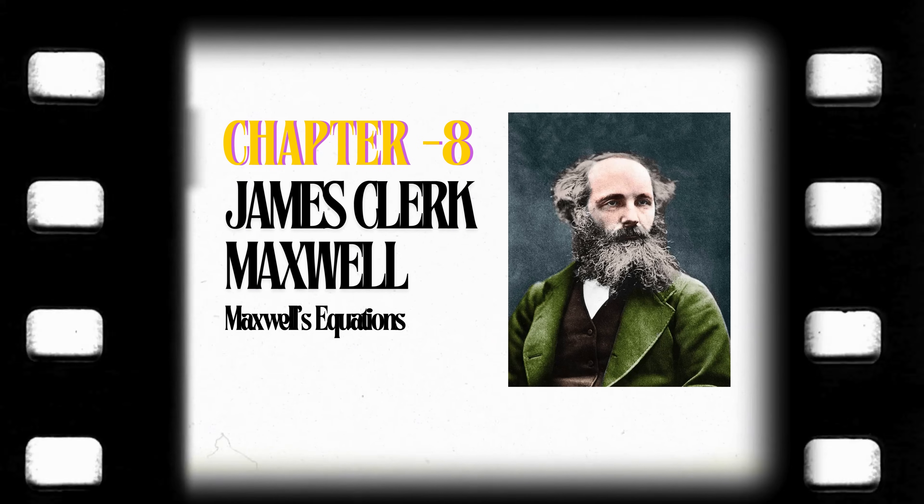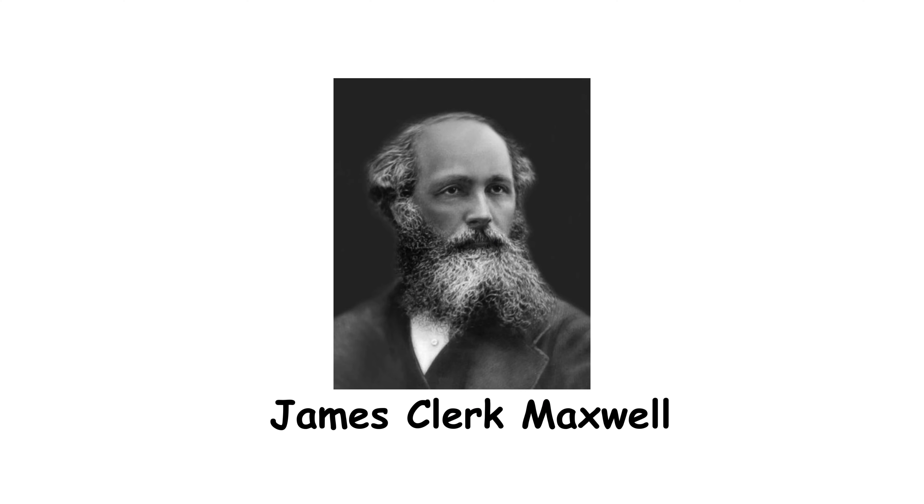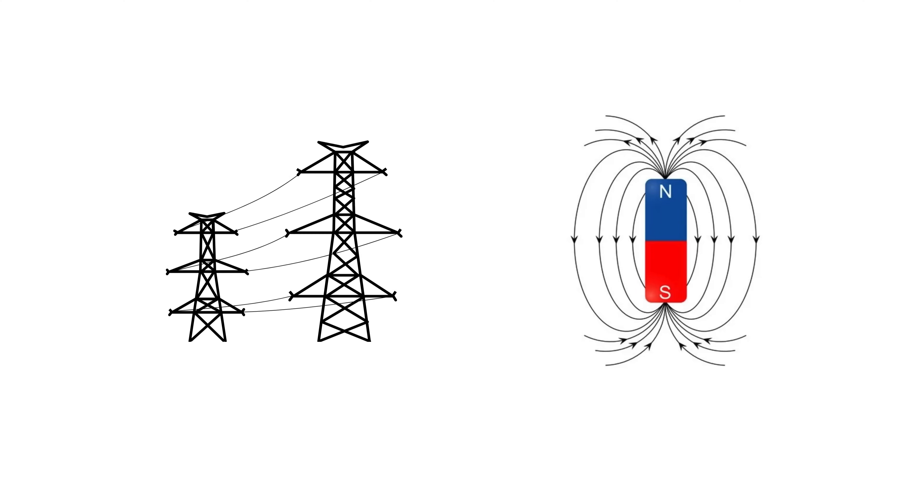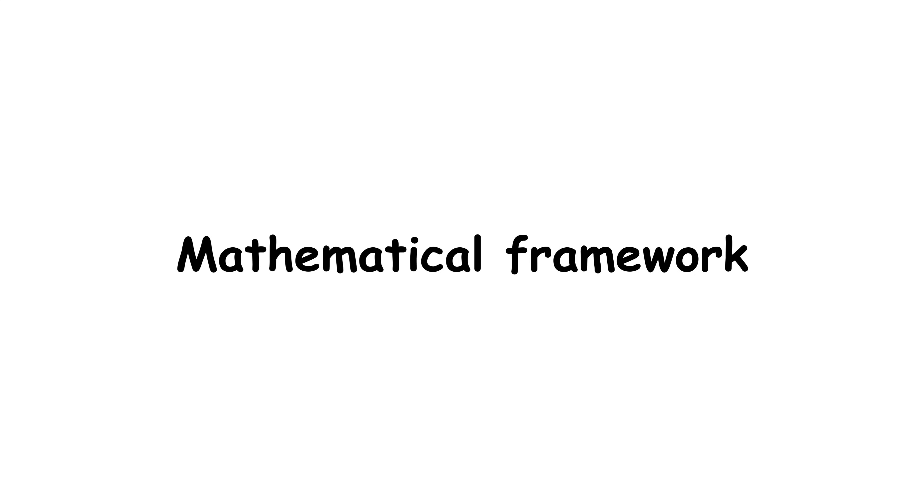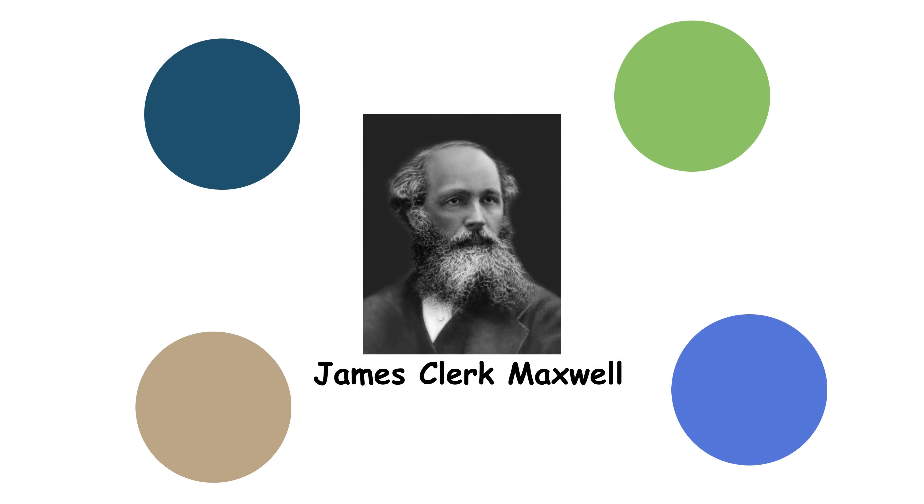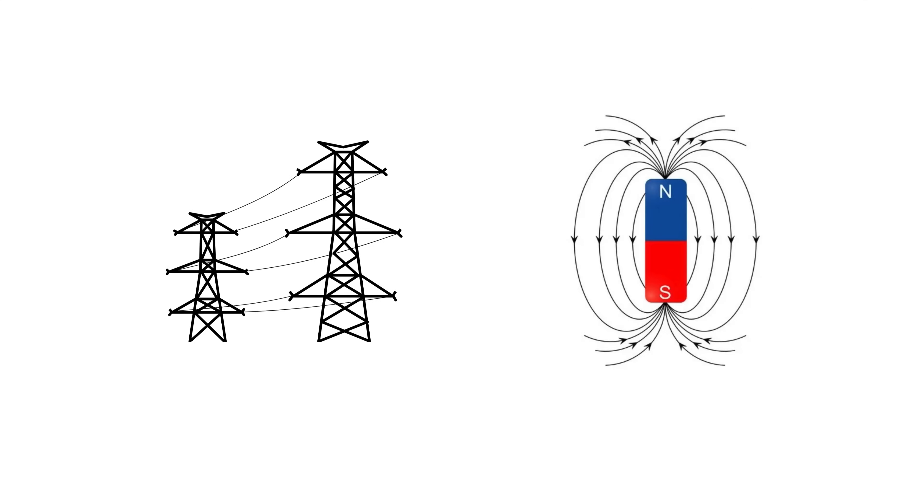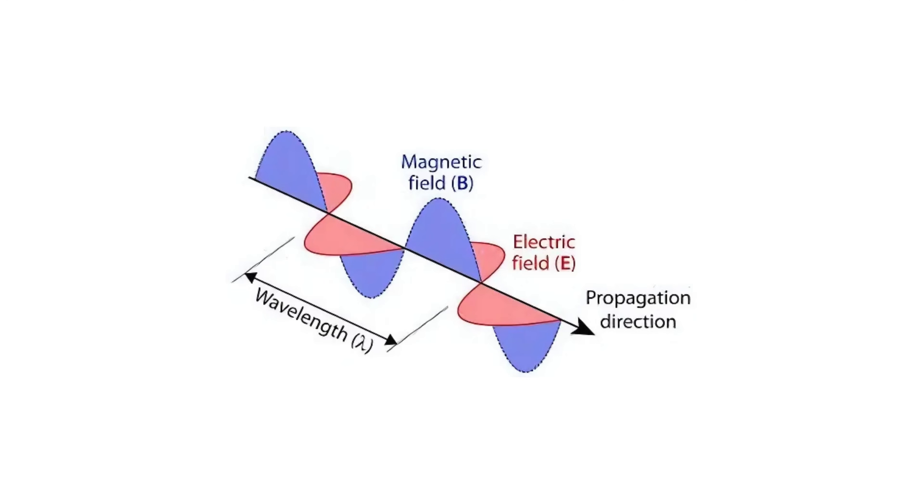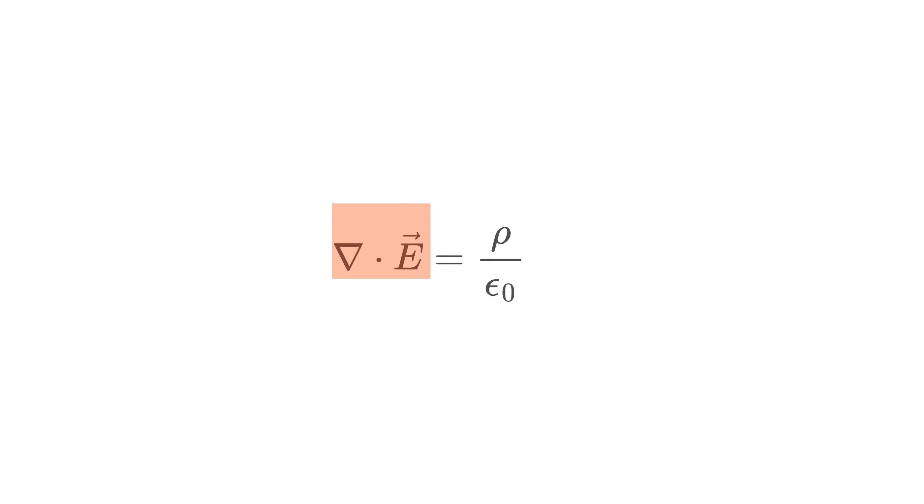James Clerk Maxwell, Maxwell's Equations. In the 19th century, James Clerk Maxwell unified electricity and magnetism into a coherent mathematical framework. He formulated a set of four differential equations that describe how electric and magnetic fields interact and propagate throughout space. These equations are: the divergence of the electric field E is equal to the electric charge density rho divided by the vacuum permittivity epsilon naught. The divergence of the magnetic field B is equal to zero. The curl of the electric field E is equal to the negative rate of change of the magnetic field B with respect to time.